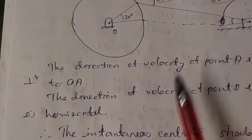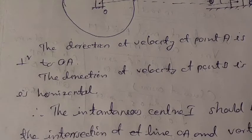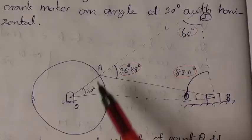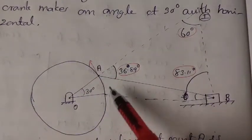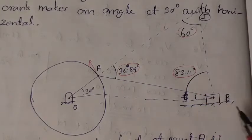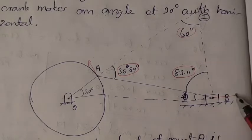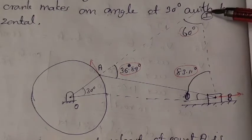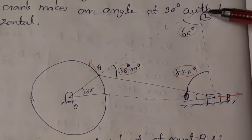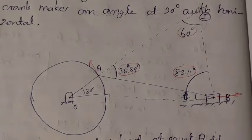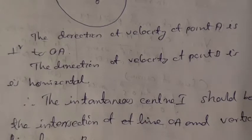We want to calculate the instantaneous center. For that, we draw a perpendicular line to the velocity direction at A, and another perpendicular to the horizontal velocity direction at B. The intersection of these two perpendicular lines gives us the instantaneous center I. From this construction we can calculate the required angles by considering triangle OAB.